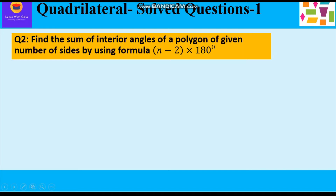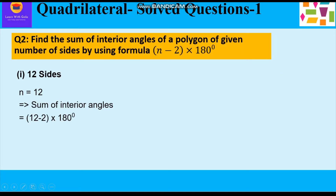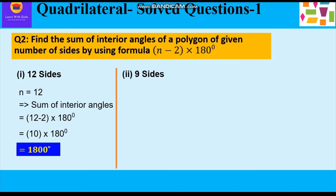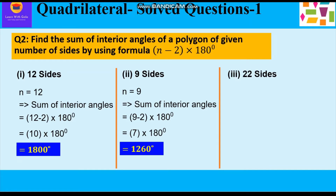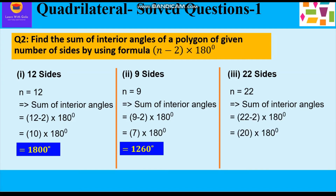First part: 12 sides, n = 12. Sum = (12 − 2) × 180° = 10 × 180° = 1800°. Second part: 9 sides, n = 9. Sum = (9 − 2) × 180° = 7 × 180° = 1260°. Third part: 22 sides, n = 22. Sum = (22 − 2) × 180° = 20 × 180° = 3600°.